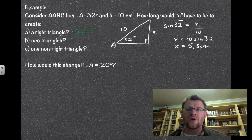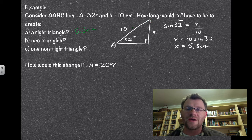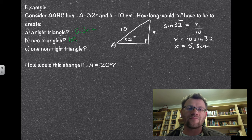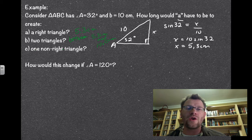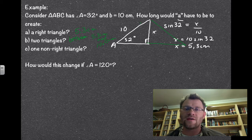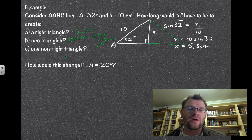For two triangles, side A must be greater than 5.3 but also less than 10, because once it's greater than 10 it would pass angle A. So side A must be between 5.3 and 10 centimeters (not including 10). For one non-right triangle, side A would have to be greater than 10 centimeters, since it would swing all the way to the right and can't swing back to the left.